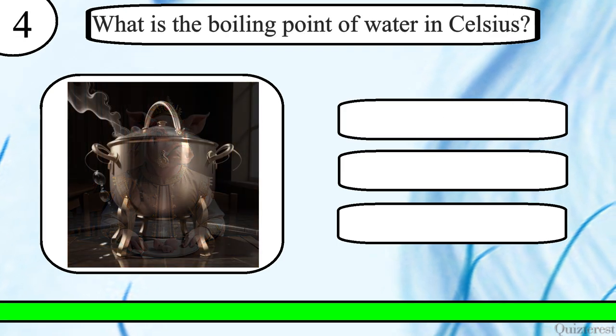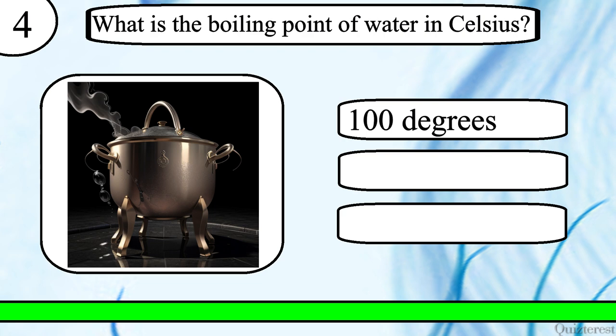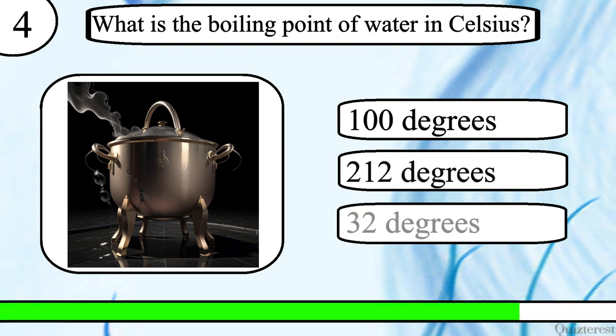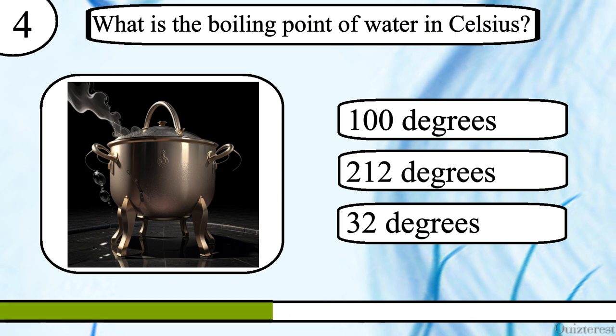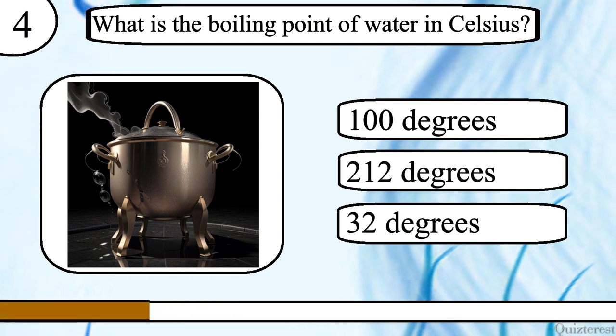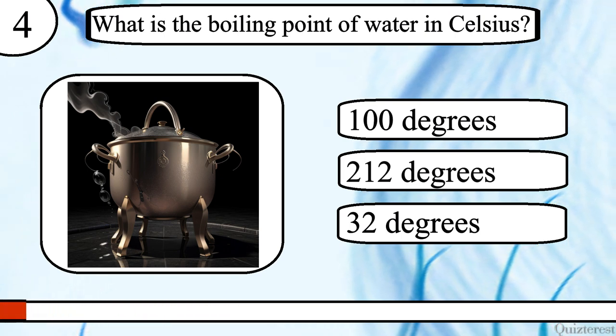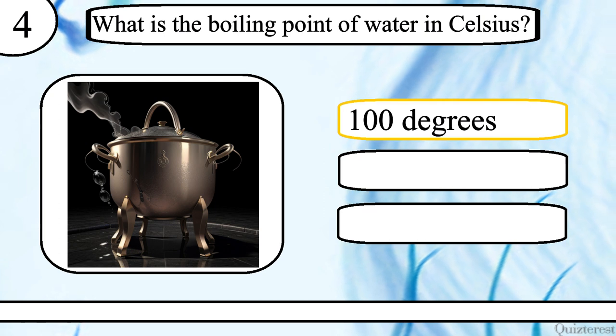Question 4. What is the boiling point of water in Celsius? 100 degrees, 212 degrees or 32 degrees? The correct answer is 100 degrees.